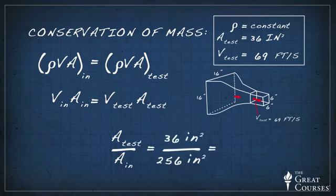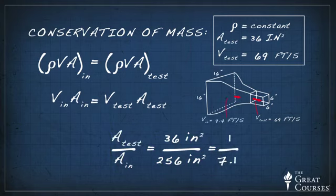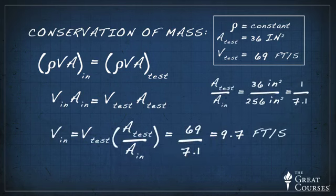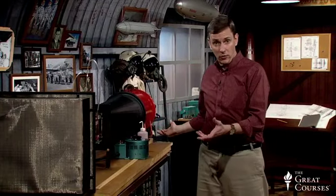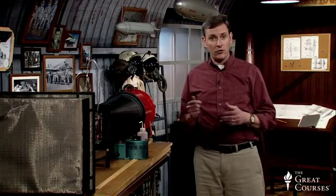That's such a low speed that I really don't feel any breeze at all ahead of the wind tunnel, even when the test section speed is 69 feet per second. Likewise, if we need to know the local velocity at any other point within the wind tunnel, all we need is the local cross-sectional area.